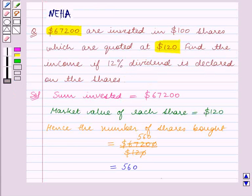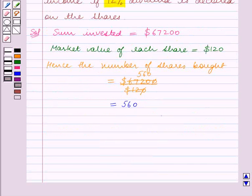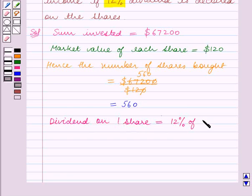It is also given that 12% dividend is declared on the shares. So dividend on one share is equal to 12% of nominal value.